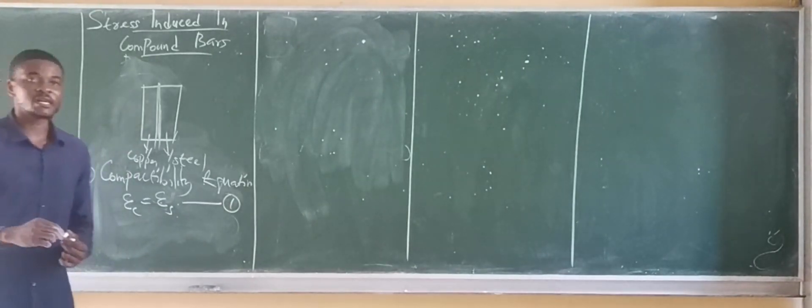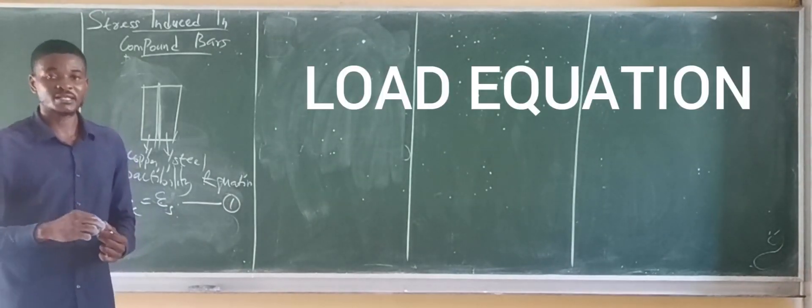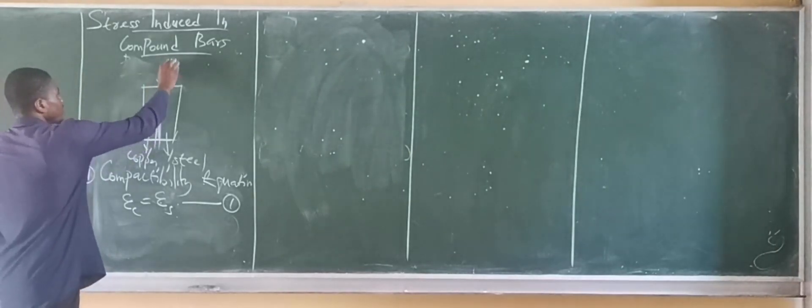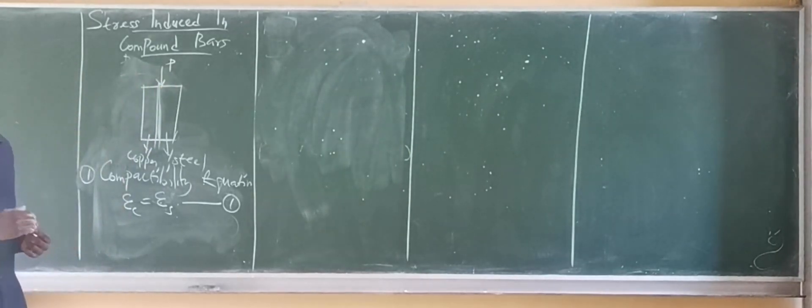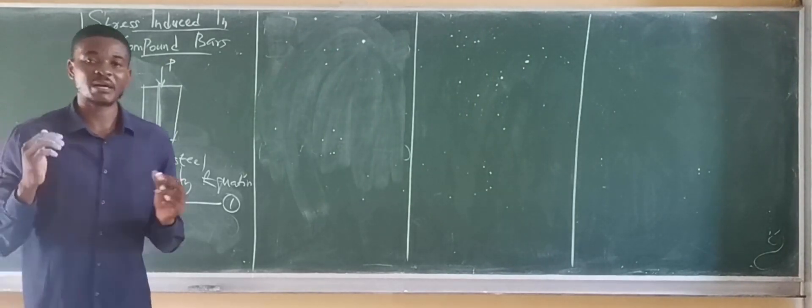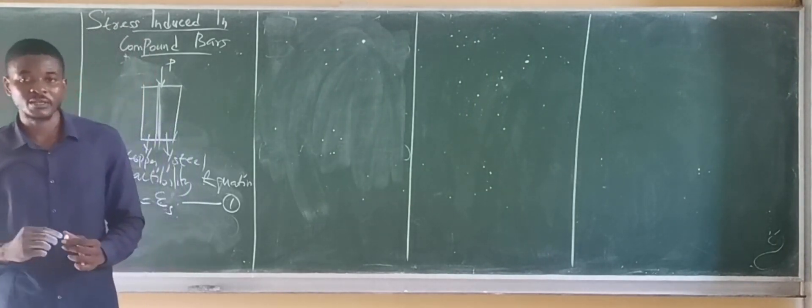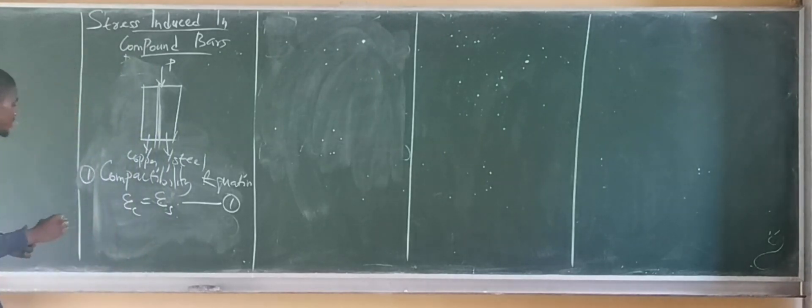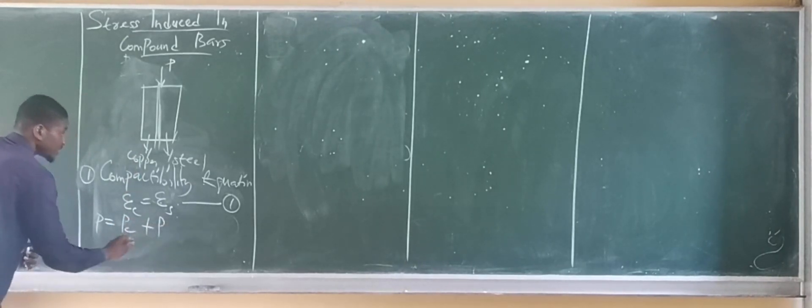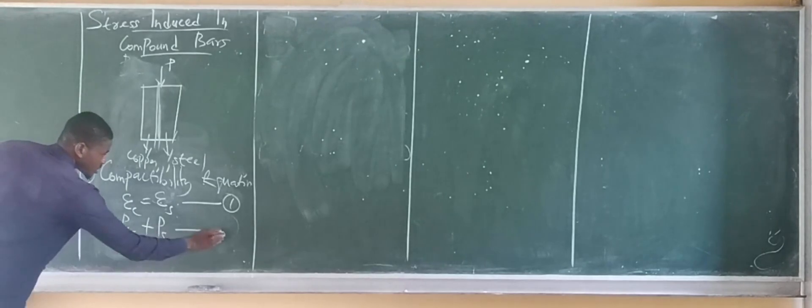The next equation to consider is the load carried by the bar. If the compound bar carries the load P, this load is equal to the individual loads carried by each of the bars that make up the compound bar. So this load P is equal to the load carried by copper, which is Pc, plus the load carried by steel.